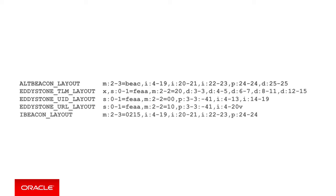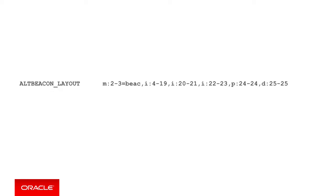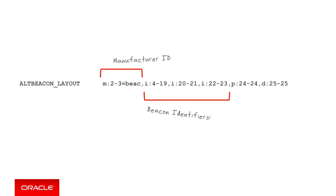As you may know, an alt beacon and iBeacon are made up of a UUID, major and minor values — the identifiers for the beacons that get transmitted. If you read the alt beacon layout, it says the Bluetooth packet for the alt beacon will have as its second and third bytes the hard-coded string BEAC — short for beacon — representing the manufacturer, Radius Networks. Then the fourth to 19th bytes are the UUID value, followed by the 20th to 21st bytes which carry the major ID value, and the 22nd and 23rd bytes carry the minor ID value. The 24th byte carries the device's power, and the 25th byte carries an optional data payload unique to alt beacons.